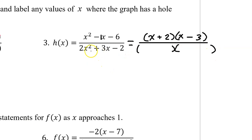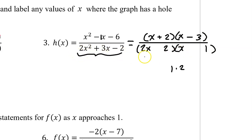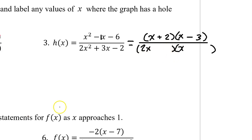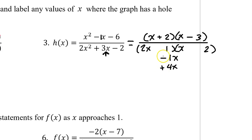Let's practice our factoring skills on this trinomial. 2x squared will factor as 2x times x. Then we look at the 2, which only factors as 1 times 2. Since there is no GCF in the original problem, there will never be a GCF inside the parentheses either, so I know it has to be 1 times 2 in this order. Inner plus outer must equal the middle: inner gives 1x, outer gives 4x. To make a middle of positive 3, I need negative 1x and positive 4x.